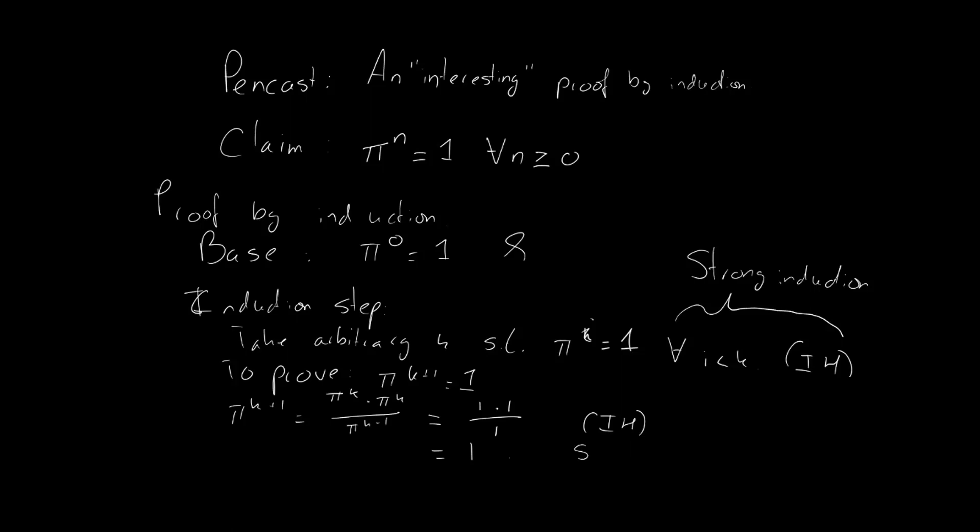So, by induction, we seem to have proven that π to the power n equals 1 for all n larger than or equal to 0. But as we stated earlier, clearly π to the power 1 or π to the power 3 or π to the power 1000 does not equal 1.